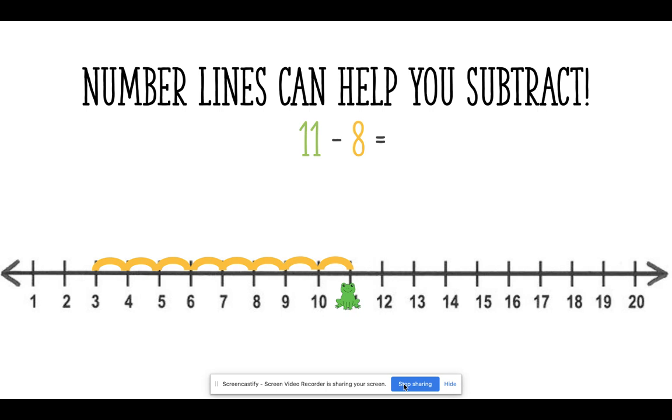When I mark my spaces, and if my froggy starts jumping, he's going to jump back 8 spaces and stop at 3. Let's double check. 1, 2, 3, 4, 5, 6, 7, 8. My froggy stopped at the number 3. Therefore, 11 minus 8 equals 3.